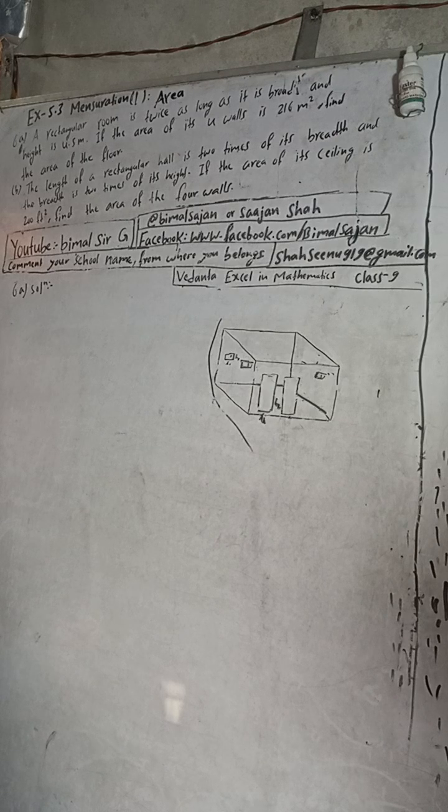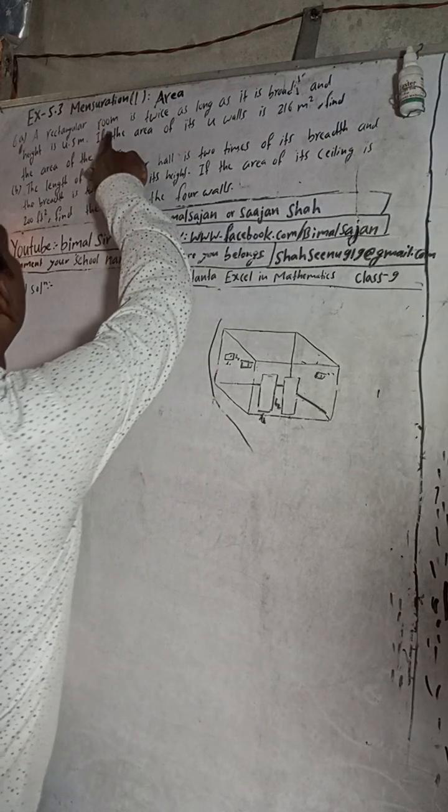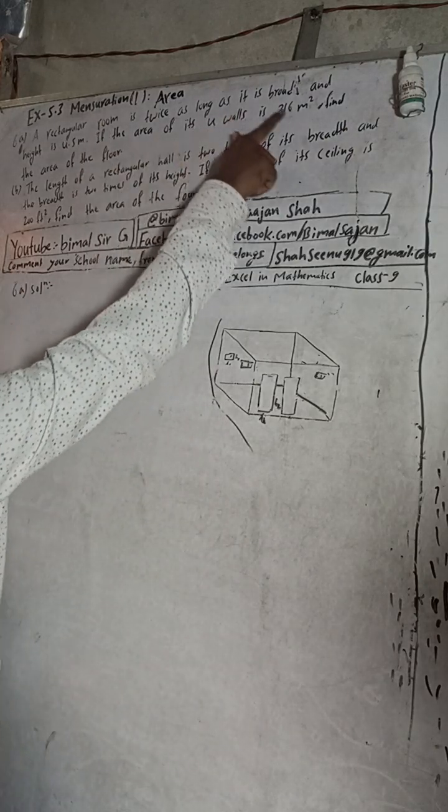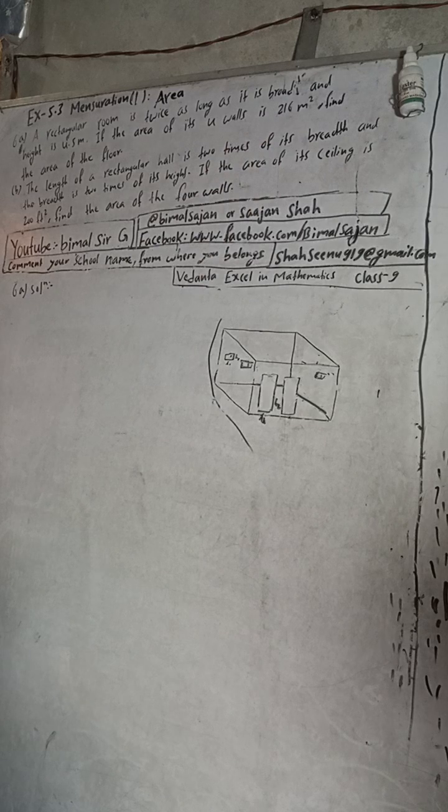The question is: A rectangular room is twice as long as it is broad, and the height is 4.5 meters. If the area of its walls is 260 meters square, find the area of the floor.